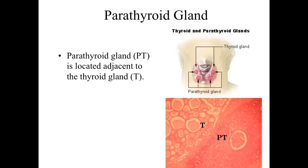The parathyroid gland is going to be a structure that's located adjacent to the thyroid gland. You can see that both in the anatomical drawing to the top, as well as the histological image at the bottom. We've got the thyroid with the thyroid follicles, and then we've got the parathyroid gland to the bottom right.